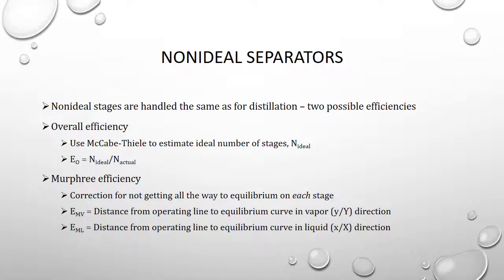We're not limited to ideal separations. Just as with distillation, we can handle non-ideal behavior — stages that don't reach equilibrium — in two ways. The first is using an overall efficiency: we use a McCabe-Thiele diagram or the Kremser equation to estimate the ideal number of stages (assuming every stage reaches equilibrium), then divide by the overall efficiency to get the actual number of stages. The overall efficiency is defined as the ideal number of stages divided by the actual number. We can find this from experiment, from correlations, or it may be given in a problem.